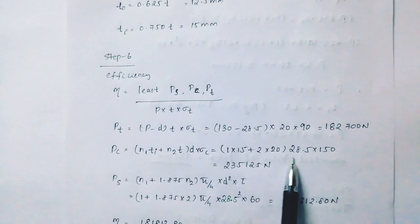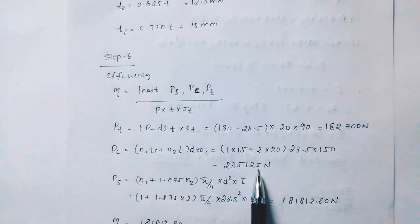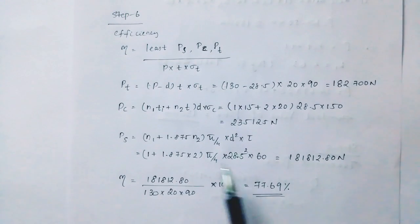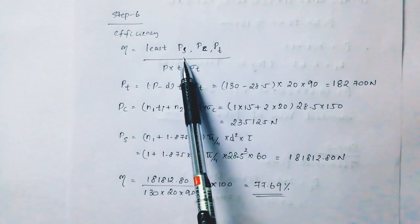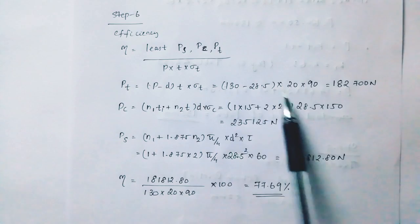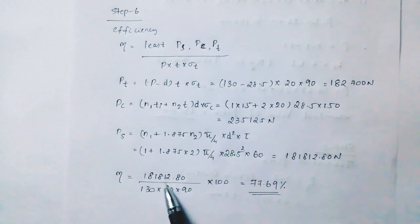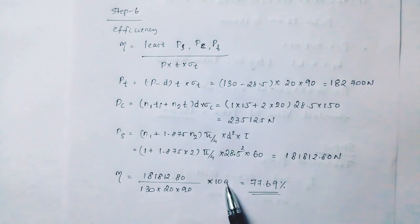pss equal n1 plus 1.875 into pi by 4 into d square into 2, which equals 181,812.80 Newtons. Then the efficiency equals 181,812.80 divided by 130 into 20 into 90 into 100 equal to 77.69%.